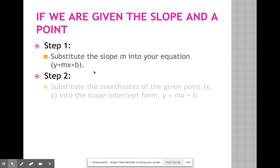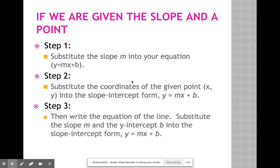Step 2: substitute the coordinates of the given point x and y into the slope-intercept form, y equals mx plus b. Step 3: then write the equation of a line. Substitute the slope m and the y-intercept b into the slope-intercept form, y equals mx plus b, and you have your answer.